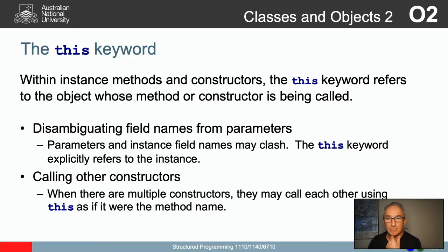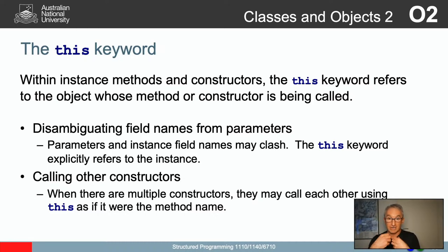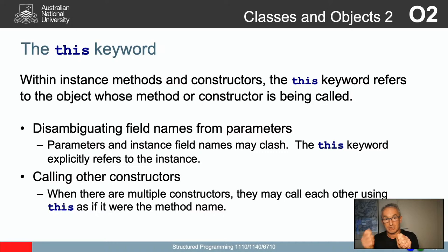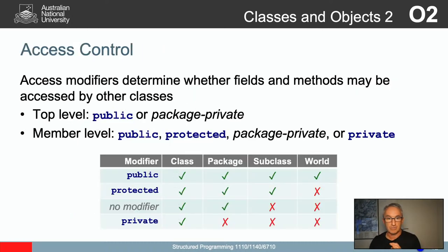Uses of 'this': disambiguating field names from parameters, and calling other constructors. When there are multiple constructors, you can use 'this' to refer to another constructor. When I write constructors for my class, I can give them parameters and have simple ones and complicated ones — sometimes I'll express the complicated ones in terms of the simple ones. If I want to call the constructor inside my own type, I can say 'this' and the parameters, and instead of having a method name it just says 'this', implicitly calling the constructor.